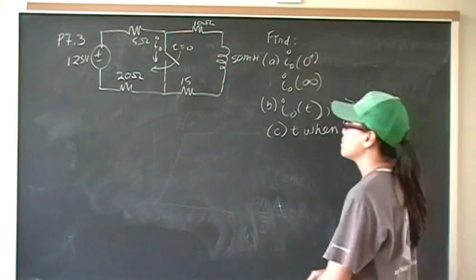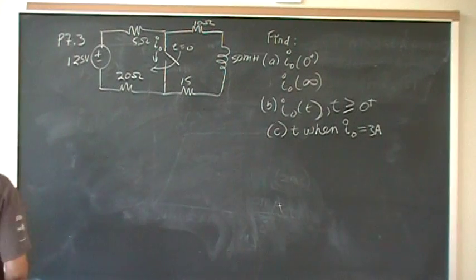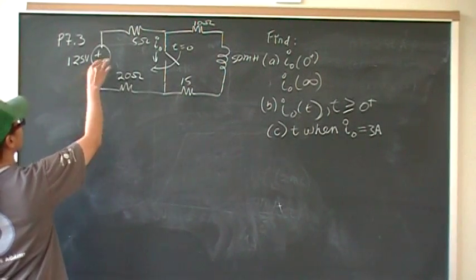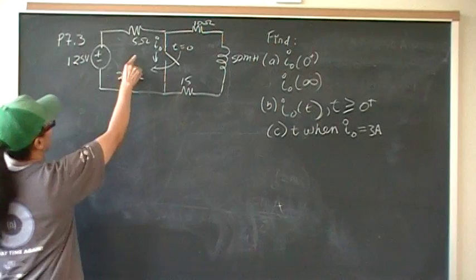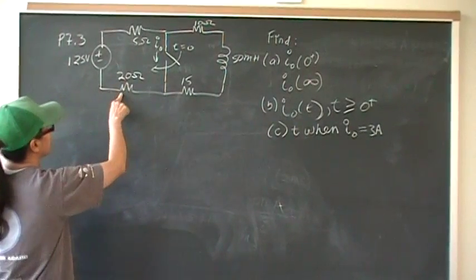Okay, so this is problem number three from chapter seven. We have the 125 volt source here, 5 ohms here, 20 ohms here.